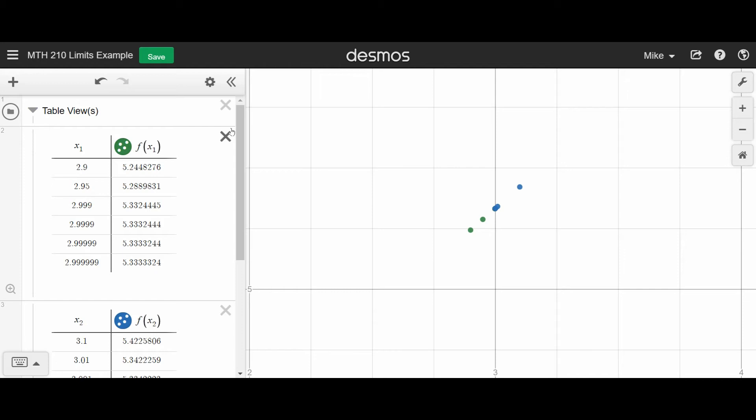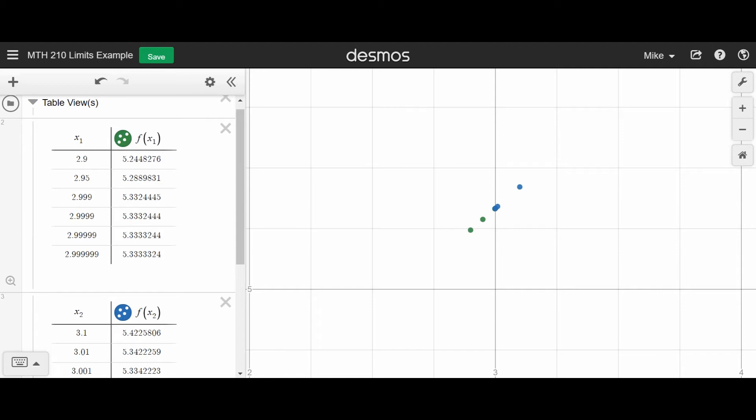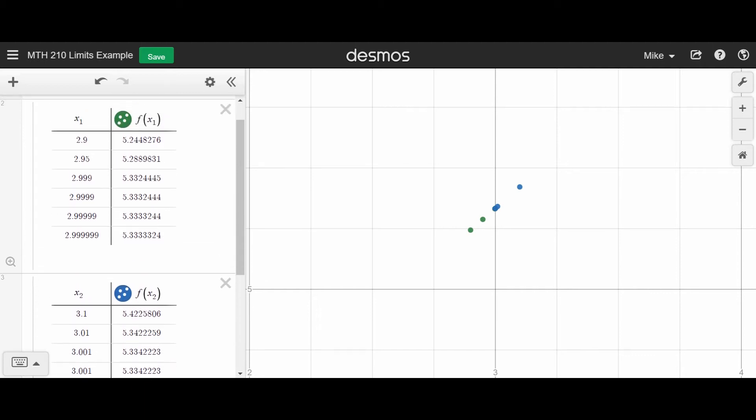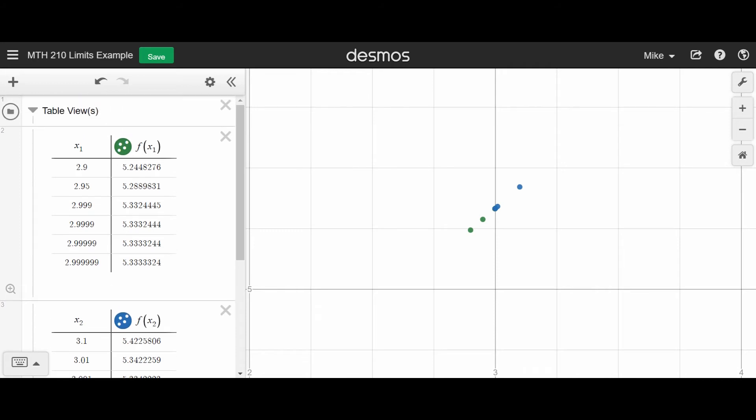It's really just paying attention to patterns. Patterns in the x values - the x values are getting closer and closer to 3 in both cases. And patterns in the y values - notice the y values are getting closer and closer and closer to 5.33.